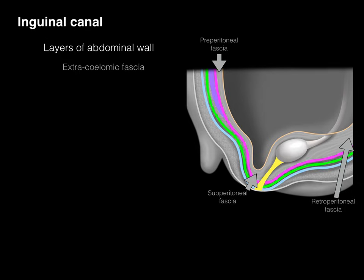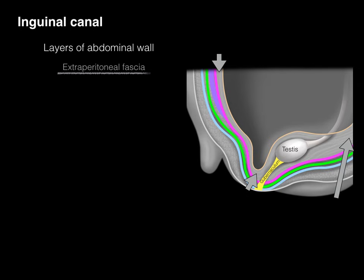There's the testis, located within this extracoelomic fascial space. The gubernaculum testis is a connective tissue structure that pulls the testis down from the retroperitoneal area to the subperitoneal area, projecting through and taking all layers of the abdominal wall to make the scrotum. I'll use the term extraperitoneal fascia and space to describe that location — the fascial space of the testis.